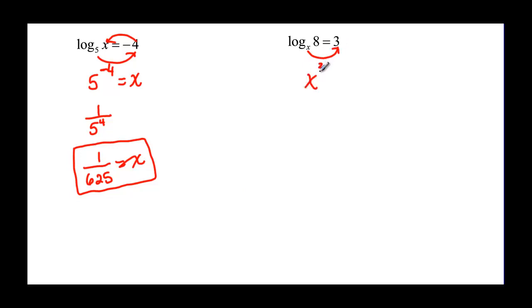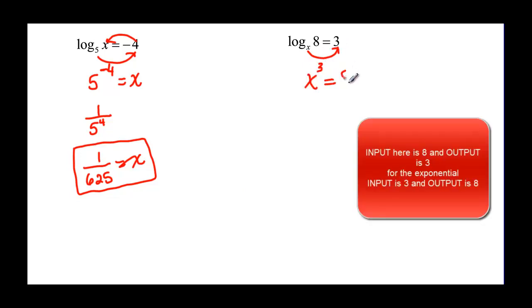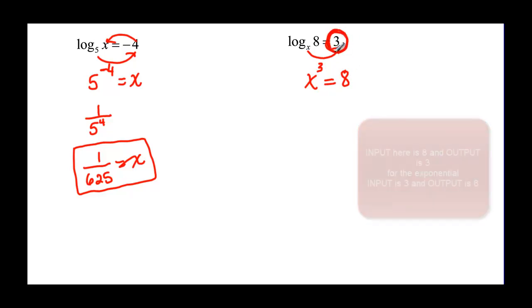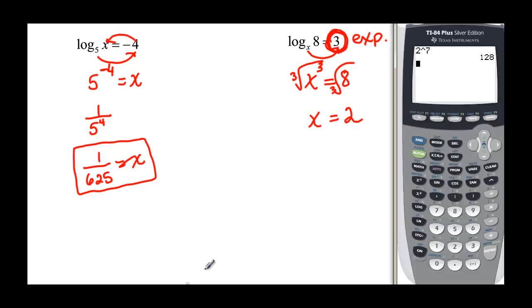x raised to the 3rd is equal to the 8. If you can just keep reminding yourselves that the other side of the equal sign is the exponent, then this conversion can be a little bit easier. Again, my base now is my variable, so I can take the cube root of both sides. This gives me x on this side, and the cube root of 8 is 2. Or if you needed the calculator, you would say, go to math, cube root is 4 of 8 is equal to 2.